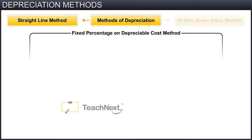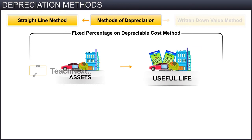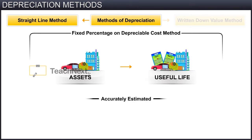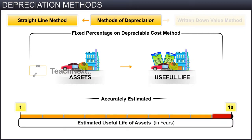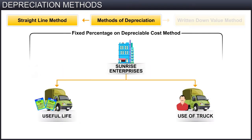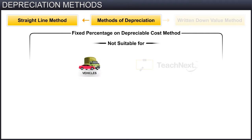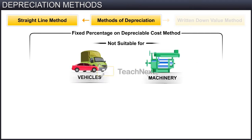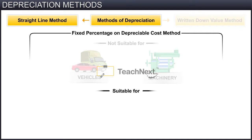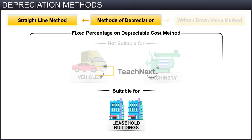This method of depreciation is usually suited and applied to those kinds of assets whose useful life can be accurately estimated and wherein the use of the asset is consistent from year to year. In this case, we can neither accurately estimate the useful life of the truck nor the use of this asset, so this method may not be suitable for vehicles or machinery. It is, however, suitable for assets such as leasehold buildings, where you will be aware of the useful life of the asset.